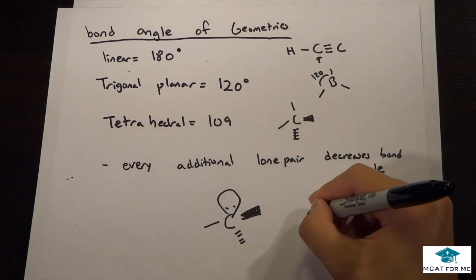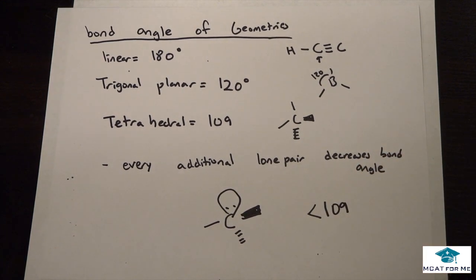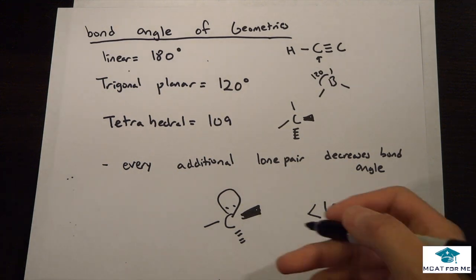So what would the bond angle be? Well, the bond angle - all you need to know is this: it's less than 109, right? It's just less. That's all that's important. We don't know how much difference. You don't need to memorize that because it will be different for every case.